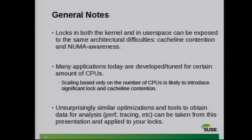Scaling based on the number of CPUs is likely to introduce a lot of lock contention and is bad for cache line business as well. Tools to get the necessary information to make decisions are also very similar to the ones we use in the kernel. You can use perf, you can use tracing.